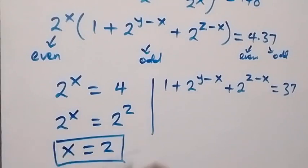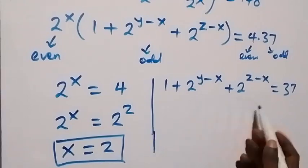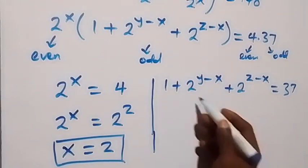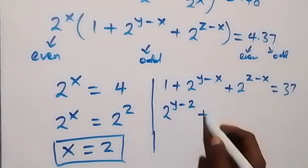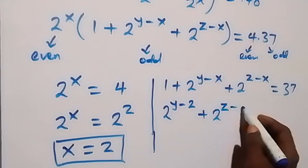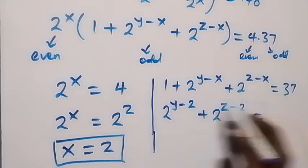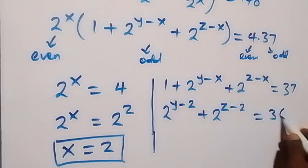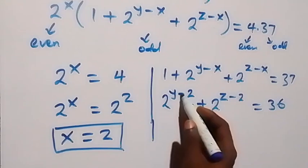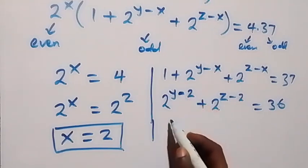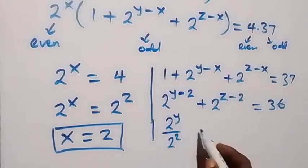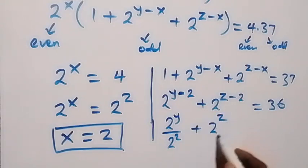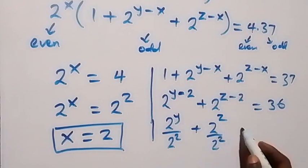Since we have x equals to 2, we can take 1 to that side. What we have left will be 2 raised to the power y minus 2, plus 2 raised to the power z minus 2, then equals to 37 minus 1, that will give us 36. Applying the law of indices, we can write this as 2 raised to the power y over 2 raised to the power 2, plus 2 raised to the power z over 2 raised to the power 2, equals to 36.